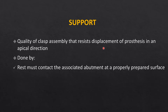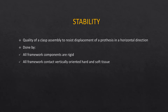Support is the quality of the clasp assembly that resists displacement of the prosthesis in an apical direction — that is, towards the supporting tissues or denture base tissues. Support is primarily provided by the rest and the rest seat on the abutment tooth.